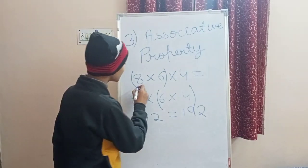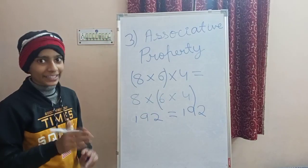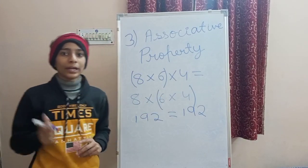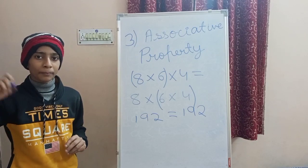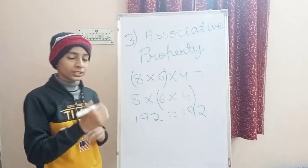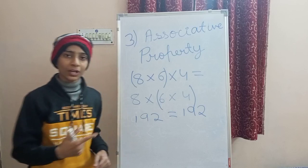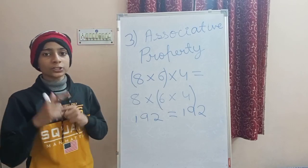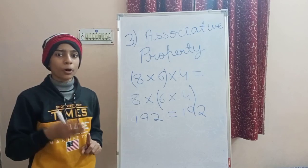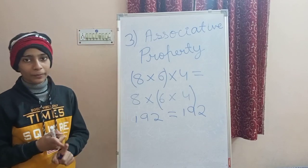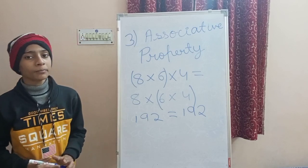Associative property means that A into B, with B in brackets, into C outside the bracket, will always equal A into B into C with B into C in brackets. The answer came equal and it was also a whole number. So the three properties — closure, commutative, and associative — all hold on multiplication.